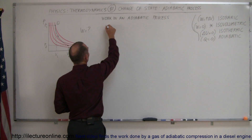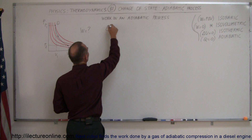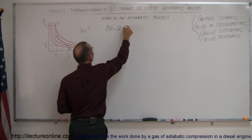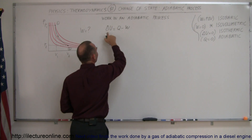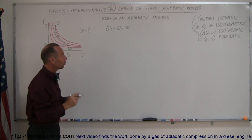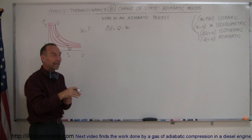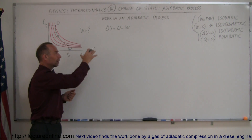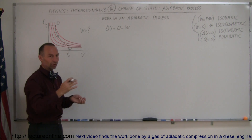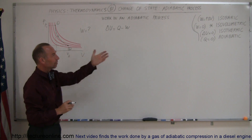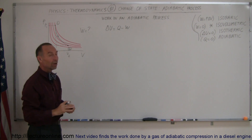Starting out with the first law of thermodynamics: delta U equals Q minus W. That's the change in internal energy equal to the heat added to the gas minus the work done by the gas. That first law of thermodynamics applies to any of the processes.